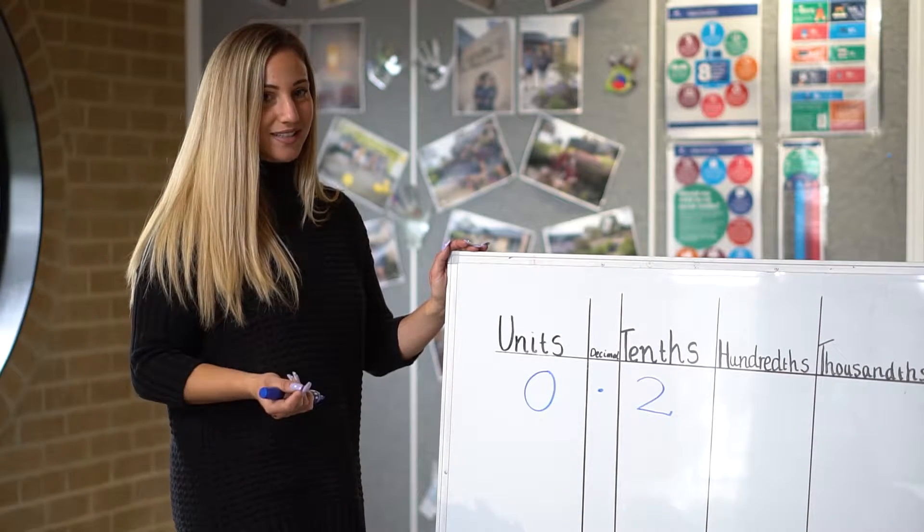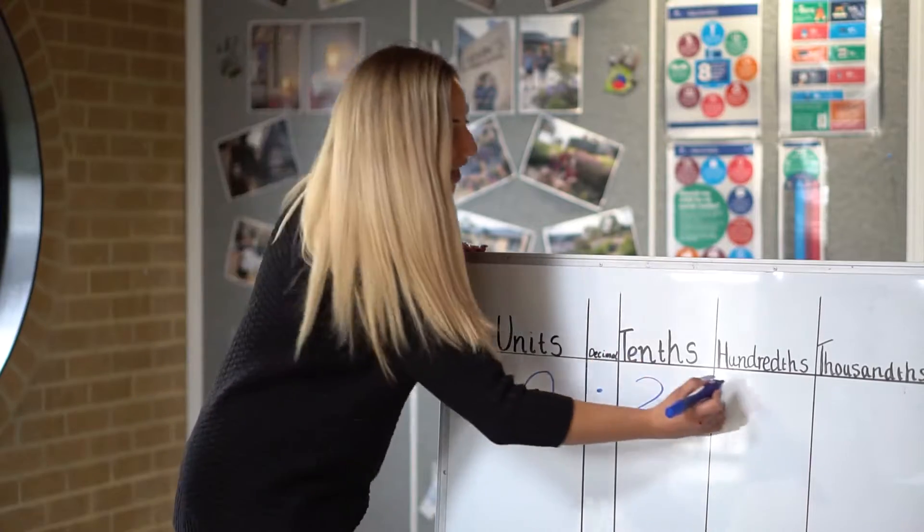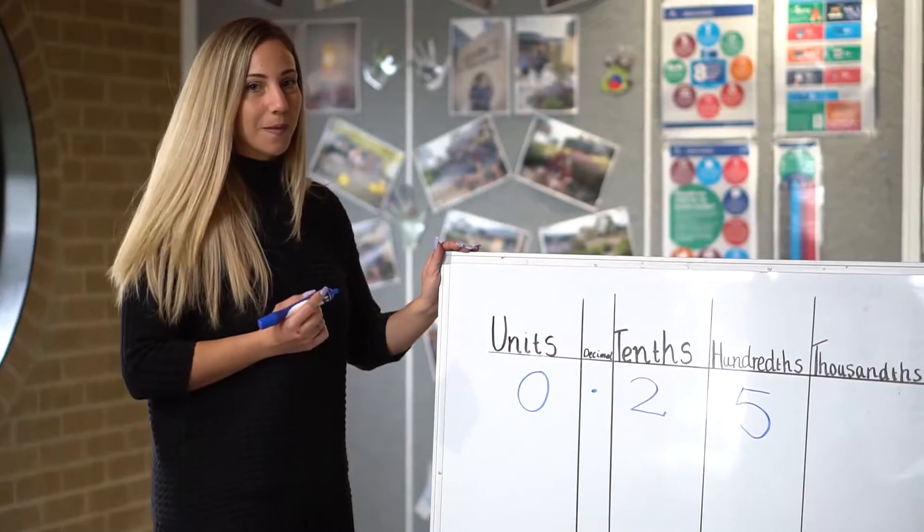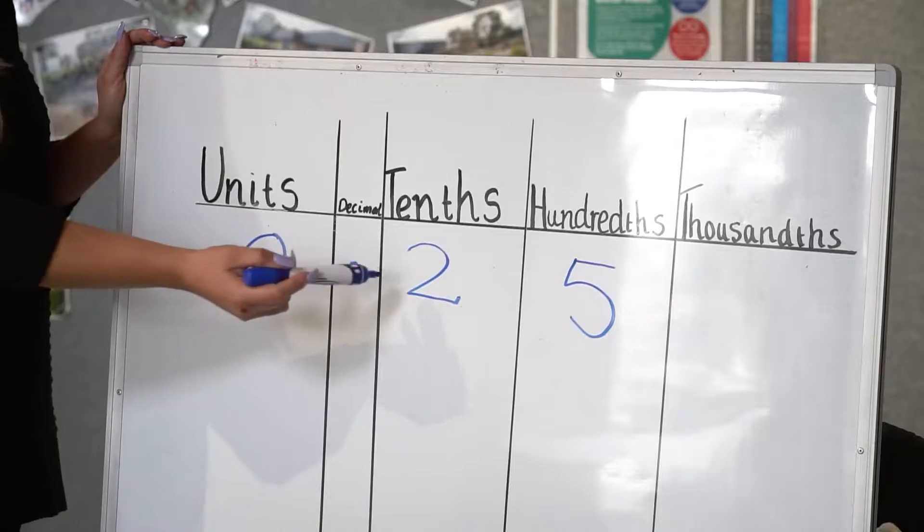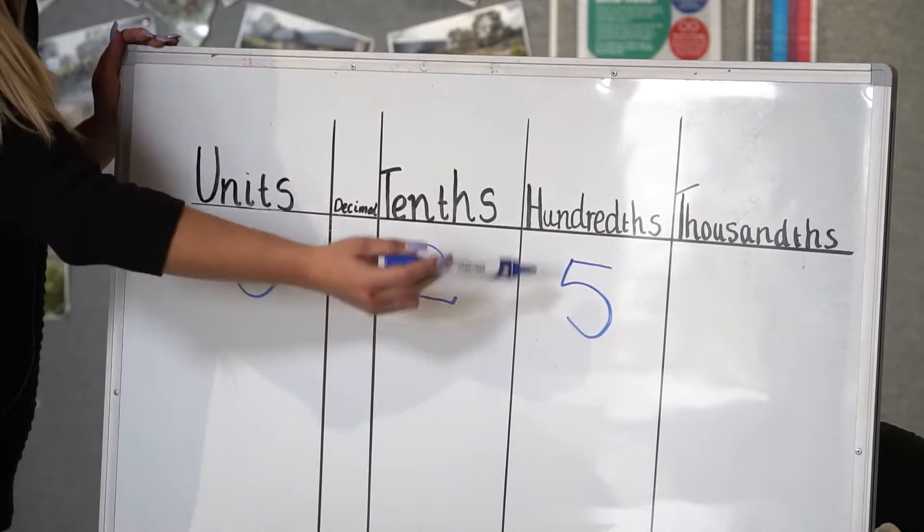If we look at the next decimal, I'm going to add a five here in this box. Now we have two tenths and five hundredths.